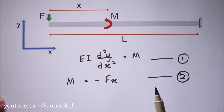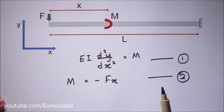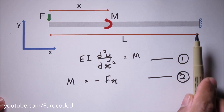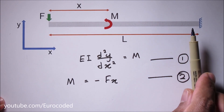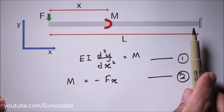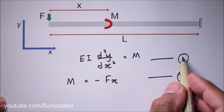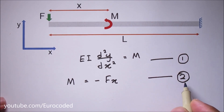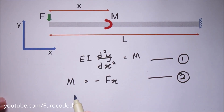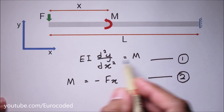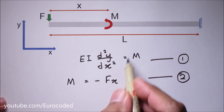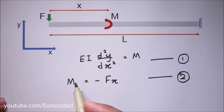If you would like to know more about the typical sign convention, please click on the YouTube card here or follow the link in the description box below. It is obvious that equation 1 is equal to equation 2 because both equations are written for bending moment M, so we can write them as equal.